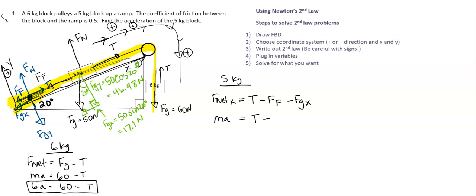which is, we don't know, but I know the equation for FF is mu times FN, minus FGX, which I found was 17.1.